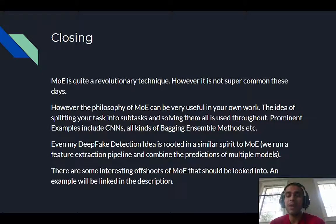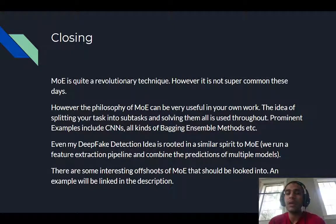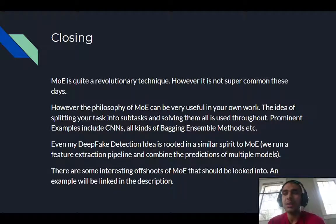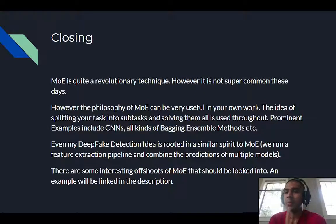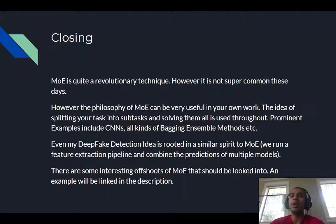This concept has been used in different ways across different tasks. CNNs, for instance, are so powerful partly because they have built-in feature extraction — they handle different parts of input data and extract different features, which is very similar to what an MoE does. Bagging and ensemble methods, where you aggregate different model predictions to get a final prediction, also have a lot in common with MoE. Even my deep fake detection work — where we look for artifacts and combine different networks to create a low-cost, lightweight deep fake detection algorithm — follows a similar philosophy.